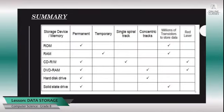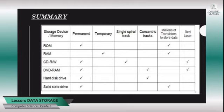The next slide is a summary of the different devices seen so far. Permanent memory includes ROM, CD-RW, DVD-RAM, hard disk drive, and solid state drive. Temporary memory — where contents are lost when power goes off — includes only RAM. Devices with a single spiral track: CD-RW. Devices with concentric tracks: DVD-RAM and hard disk drive. Devices that use millions of transistors to store data: ROM, RAM, and solid state drive. Regarding laser: red laser is used in CD-RW and DVD-RAM, whereas blue laser is used in Blu-ray disk.